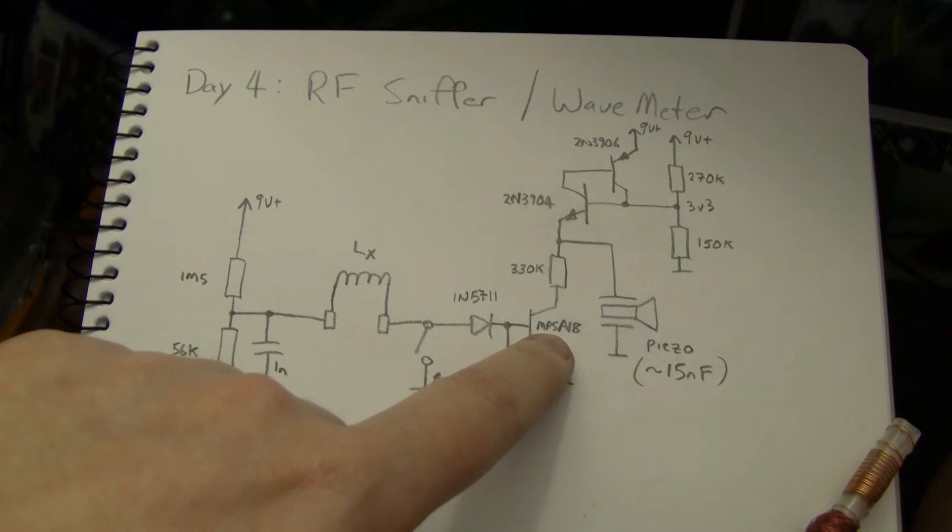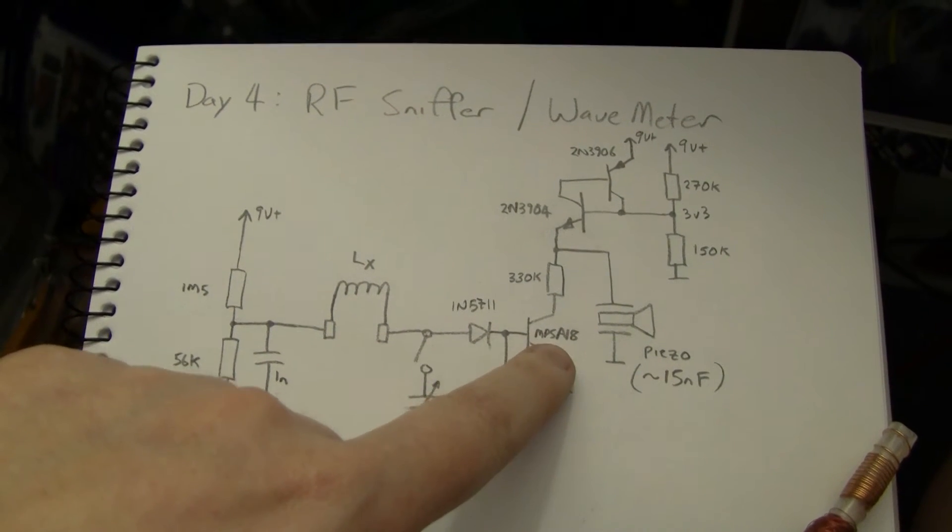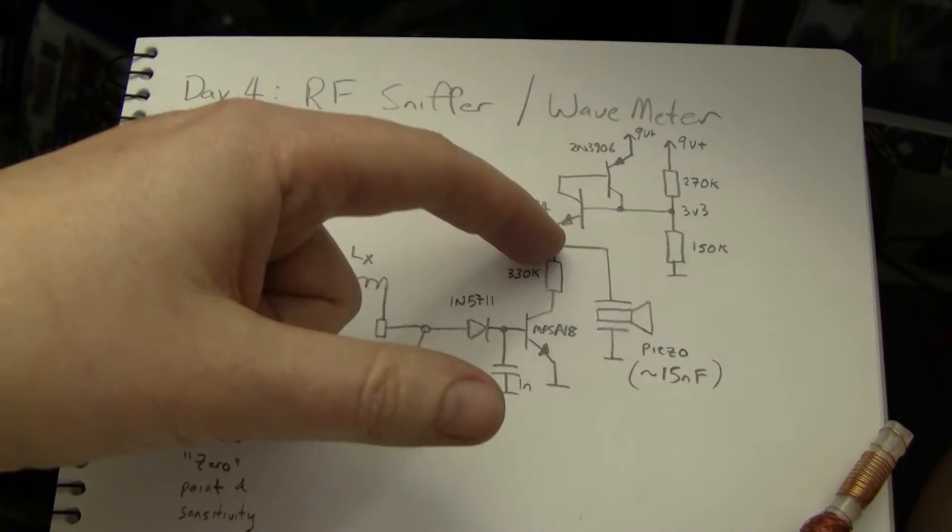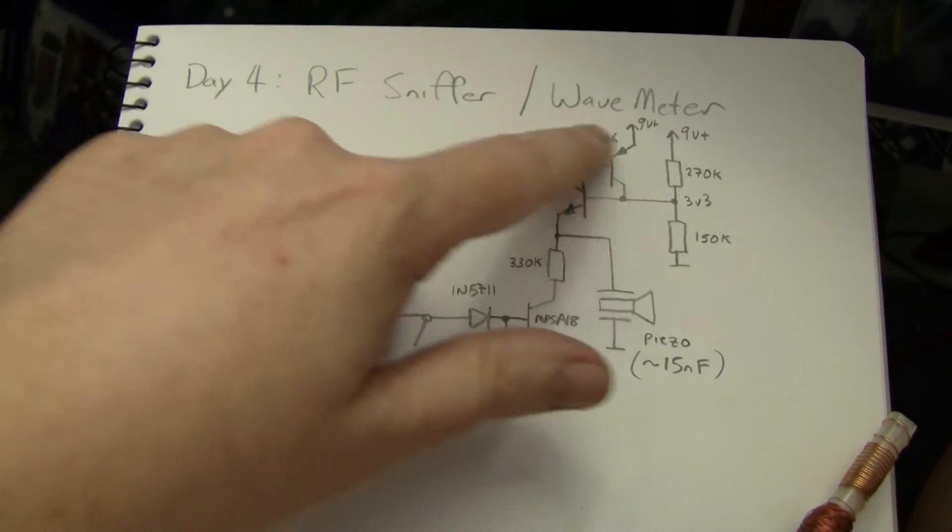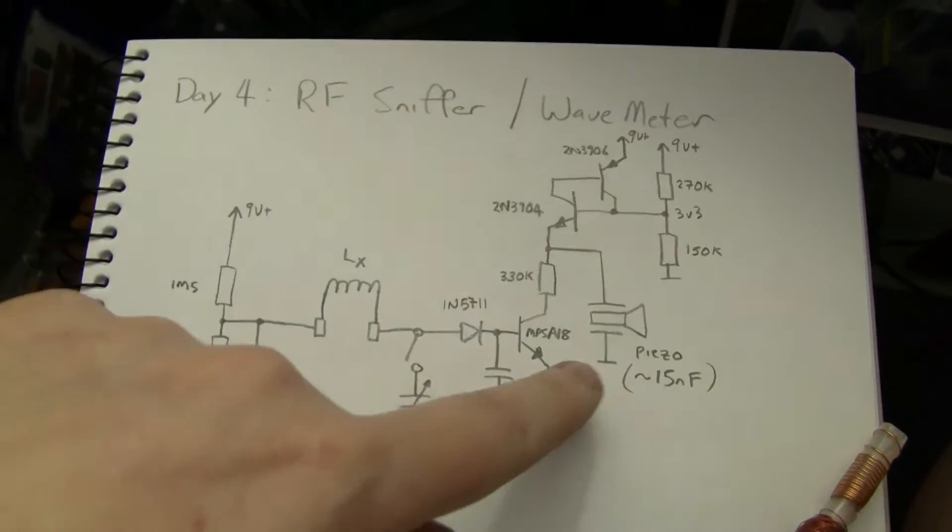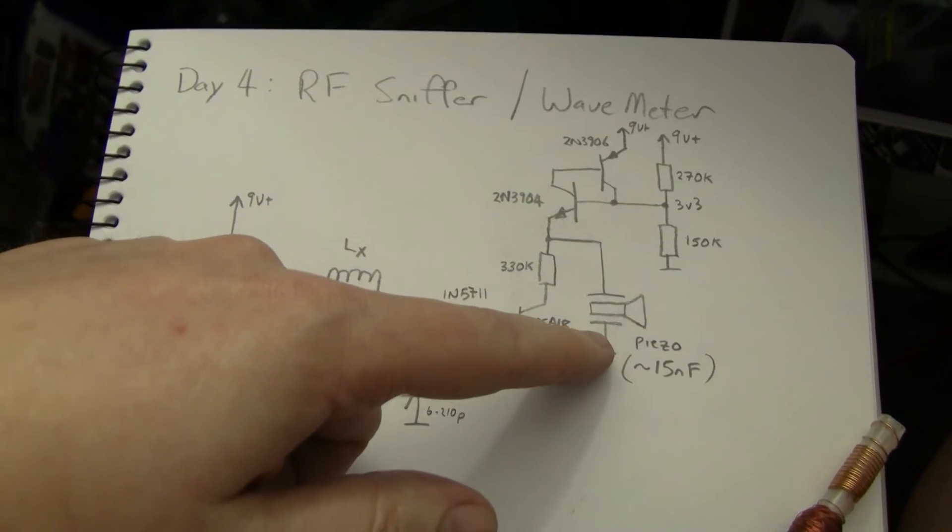This through MPSA18, which is a very high beta transistor, very good for DC gain. This pulls current out of this capacitance, so the voltage drops, eventually forward biasing the complementary pair here and turning it on, which will then recharge the capacitance quite quickly, and then cut off again, and this will produce a nice click in the piezo.